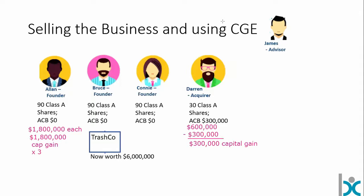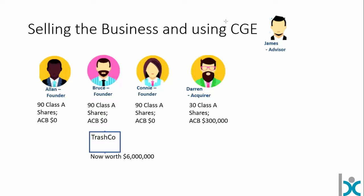This is a good opportunity for James to get involved — a big cash injection for each of Alan, Bruce, Connie, and Darren. We'd want to think about what they're going to do with the money: move to another venture, go back into the workforce, retire, invest, buy another business, buy real estate? This is a classic example where James should be involved — primarily not in a tax role, but an advisory role dealing with the allocation of funds. Norman the accountant becomes a very important resource in a transaction like this.